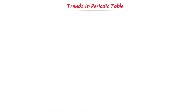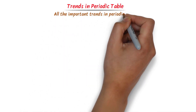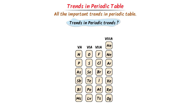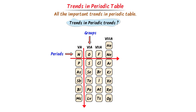Trends in the periodic table. I will teach you all the important trends in the periodic table with easy examples. First of all, let me teach you what is meant by periodic trends. Consider this periodic table. We know that columns in the periodic table are called groups and rows in the periodic table are called periods. As you move down the group or across the period, the elements change in certain ways.